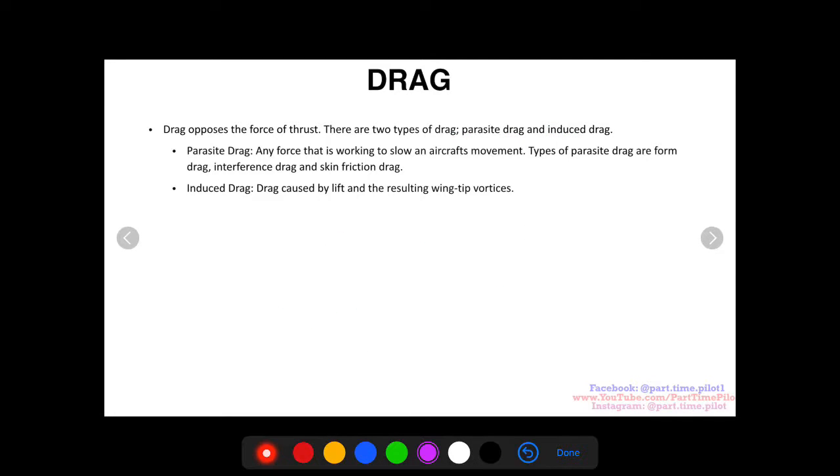So parasite drag is any force that is working to slow an aircraft's movement. Types of parasite drag are form drag, interference drag, and skin friction drag. Now we're not going to go into the details of parasite drag and these three different types of parasite drag, but we'll do that in a later video. For this video, we're going to talk about the basics of drag in general.